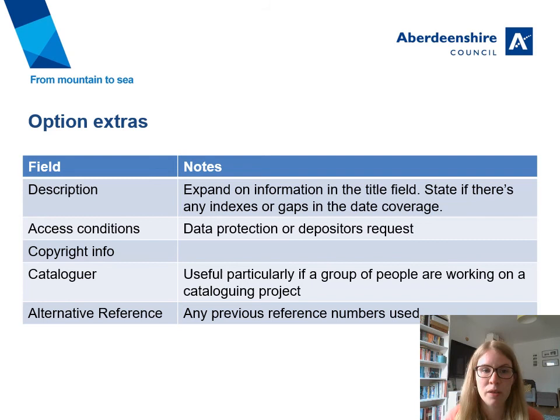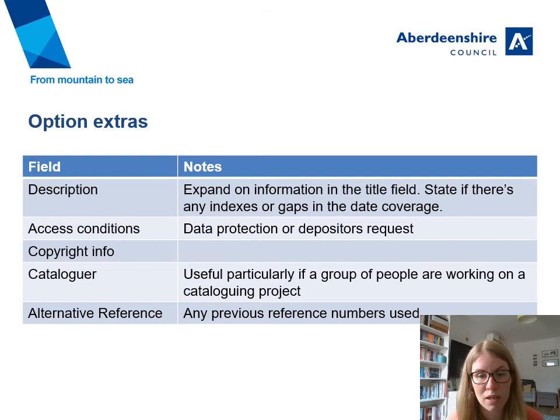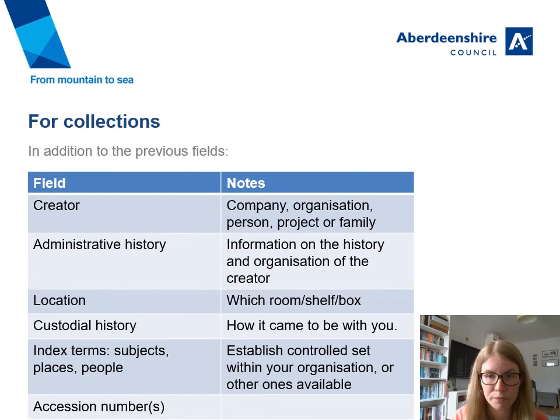You could also include a description that expands on the information in the title field — you might state if there are any indexes or if there's a gap in the date coverage, any access conditions such as data protection, and any depositor requests associated with the collection. You could include copyright information, make a note of who catalogued the item or collection especially if a group of people are working on one collection, and record any alternative references — for example if it was catalogued before or if it had a reference number with the originating organisation.